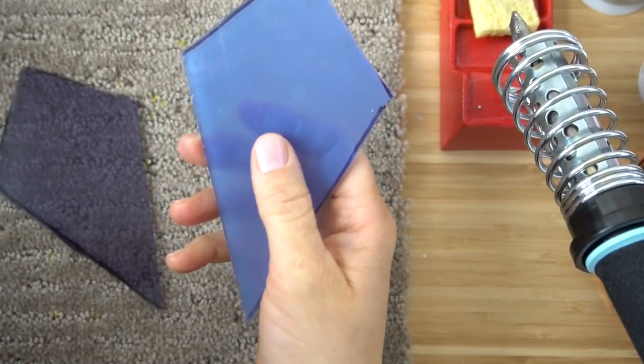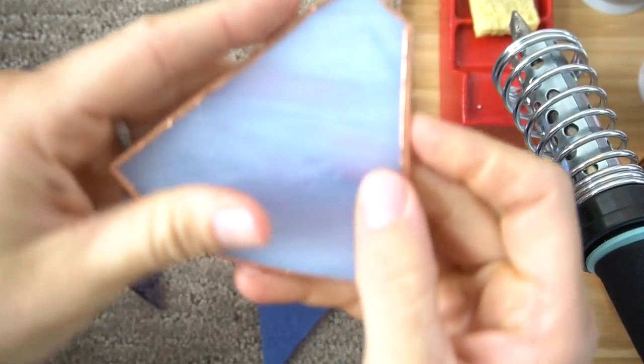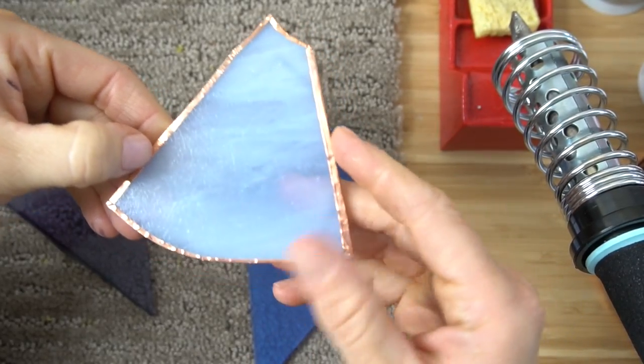The first thing we're going to be doing is covering the edges with our copper foil. You want it to be pretty even, so you want it to come over here pretty evenly with how it comes over there.